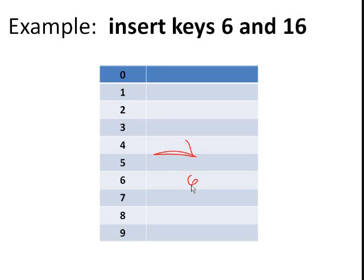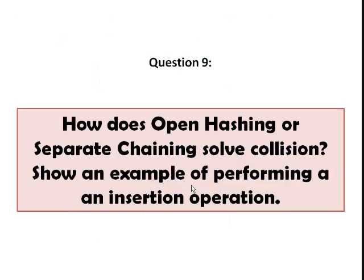So you put 6 here and that will be your first hash key. Then if you map 16 in your hash table using the standard hash function, you'll end up getting the same index value. You can see that index 6 is already occupied and that is your collision there.